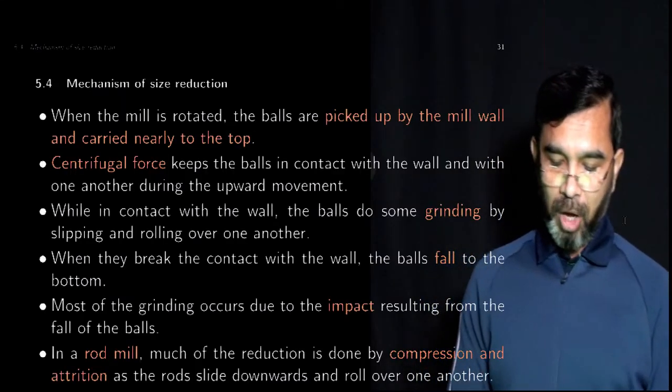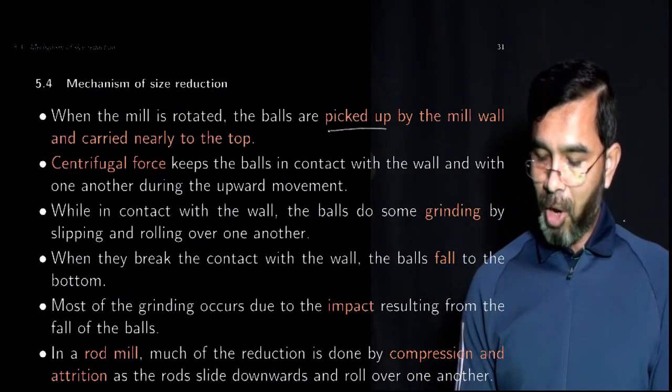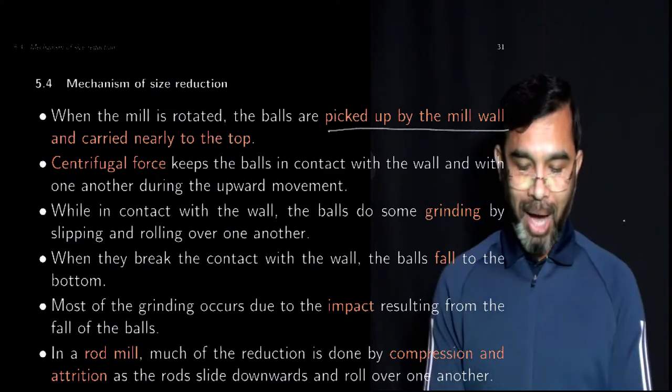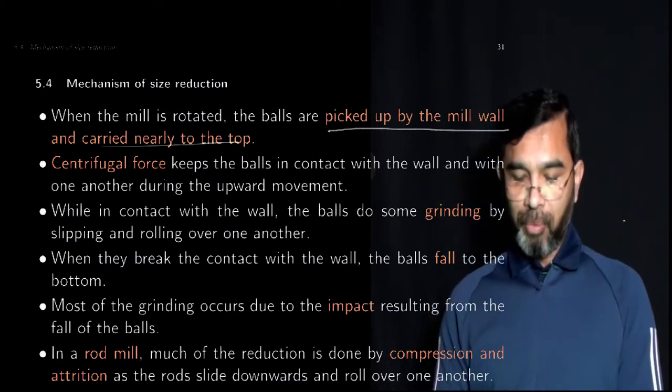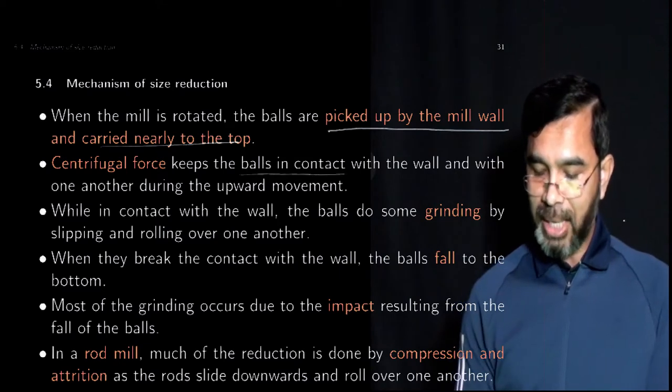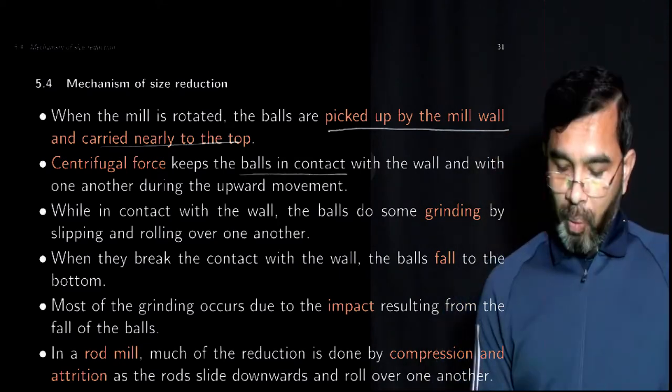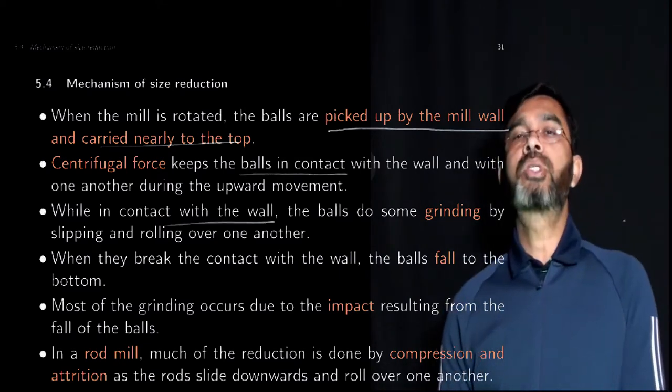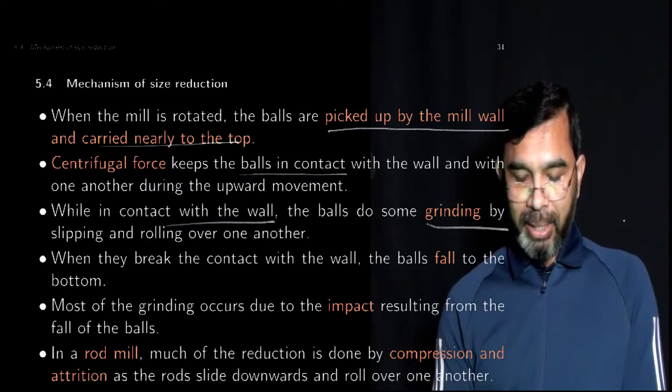So how does size reduction take place in a ball mill? When the mill is rotated, the balls are picked up by the mill wall and carried near the top. Because of the centrifugal force, the balls and the materials are kept in contact with the wall. When in contact with the wall, the balls also do some grinding by slipping and rolling over the particles, and the particles slip and roll over one another.